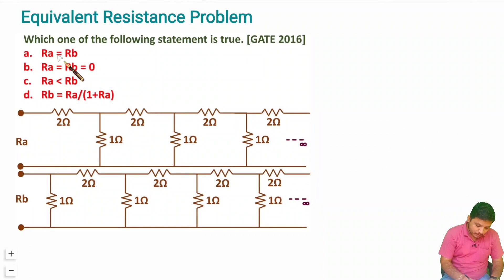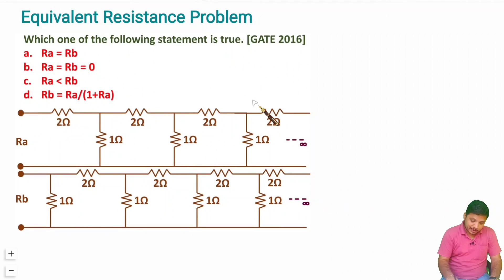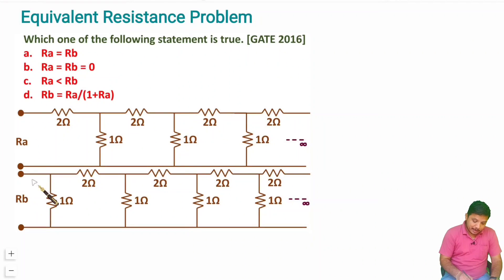Here you can observe: which one of the following statements is true? We have two circuits — this circuit is having resistance RA and this circuit is having resistance RB — and the question is based on the relationship between RA and RB.